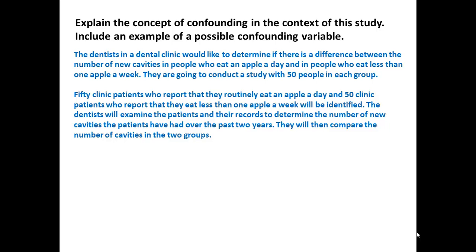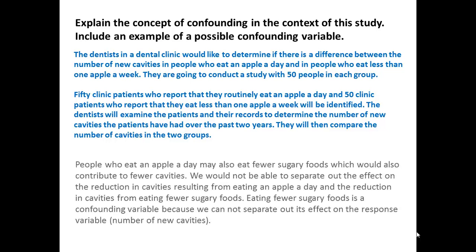If you're asked to explain the concept of confounding in context, and include an example of a possible confounding variable: people who eat an apple a day may also eat fewer sugary foods, which would also contribute to fewer cavities. We would not be able to separate out the effect on cavity reduction from eating an apple a day versus the reduction from eating fewer sugary foods. Eating fewer sugary foods is a confounding variable because we can't separate out its effect on the response variable.